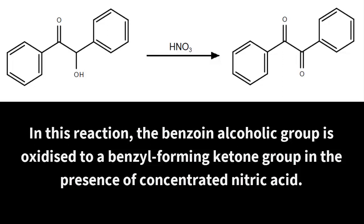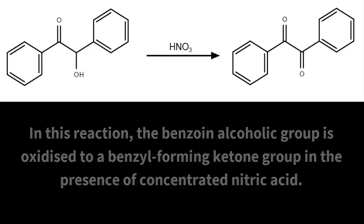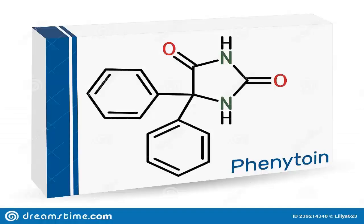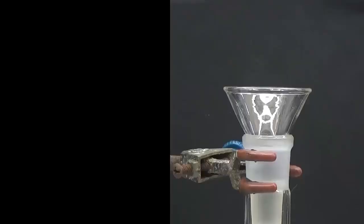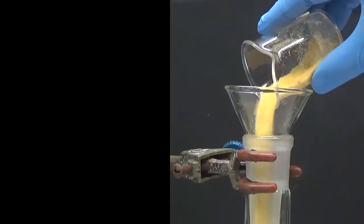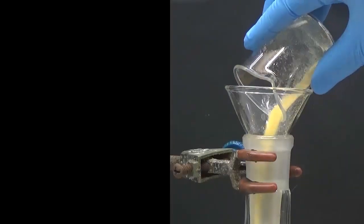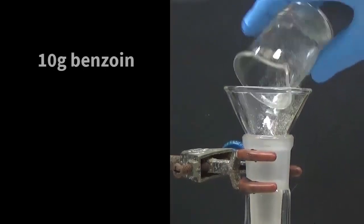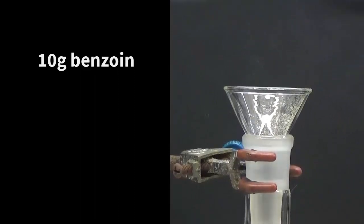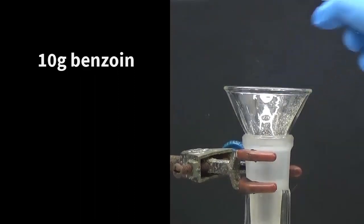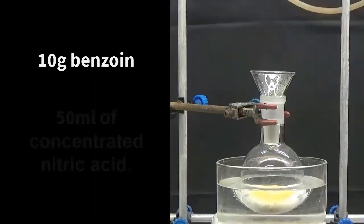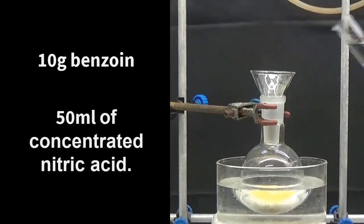Nitration does not occur because there is no sulfuric acid. Benzil is used in synthesizing drugs such as phenytoin, which is used as an anti-epileptic. To obtain the benzil, place in a 250 milliliter flask 10 grams of benzoin.